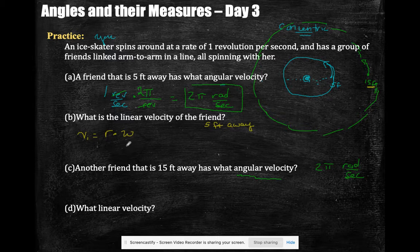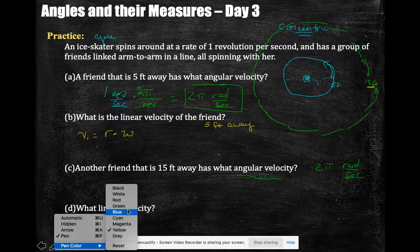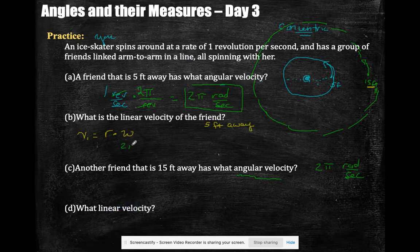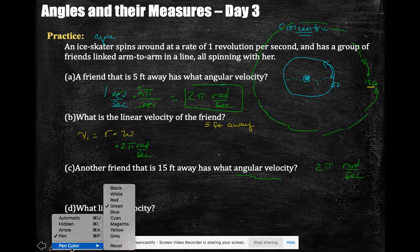So linear velocity of this friend, the 5 foot friend, and I already know from before what my omega is, and I was given the radius.